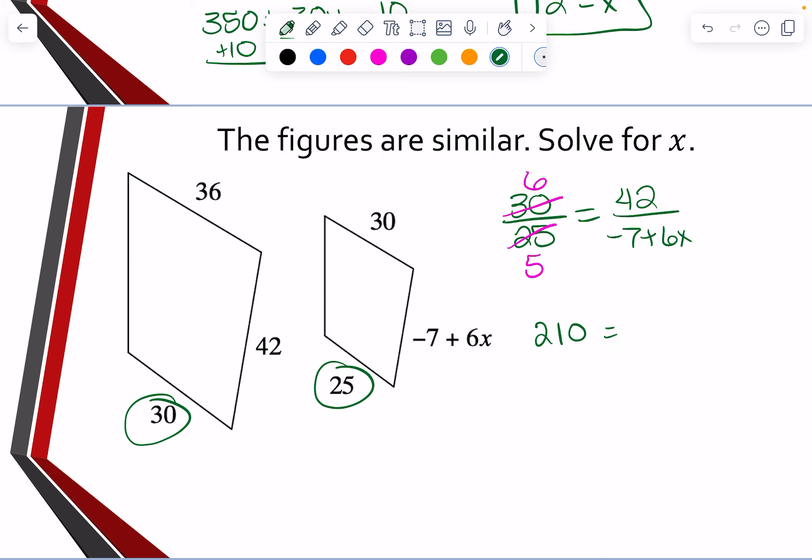So now we're going to take five times 42, which is 210. And then I'm going to take six times that, which is negative 42. And then I'm going to go six times six X, which is 36X. At that now, I'm going to add the 42 to both sides. So that would get me 252 equals 36X.